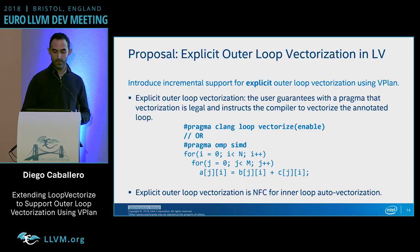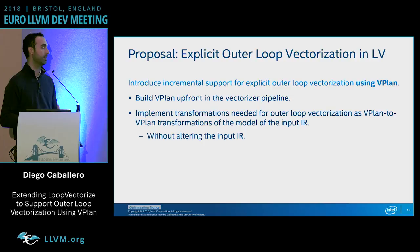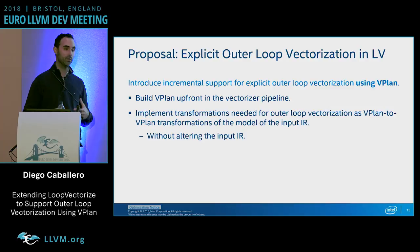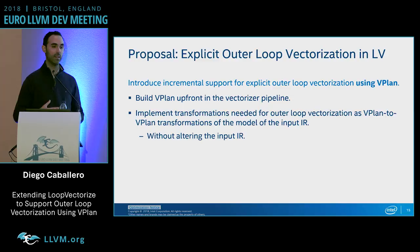We want to bring vPlan up front in the vectorizer pipeline and implement all the transformations needed for outer loop vectorization as vPlan-to-vPlan transformations on the model of the input IR, without modifying the input IR itself. This is very important — in order to vectorize some outer loops, you really need to modify the outer loop model before even considering whether the vectorization is beneficial.